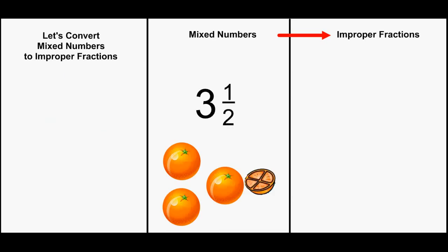Let's do that again. Let's start with a mixed number and change it to an improper fraction. Here, I have 3 and 1 half oranges.